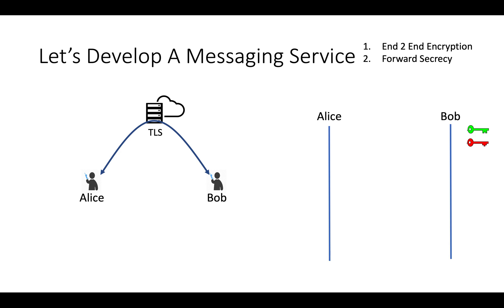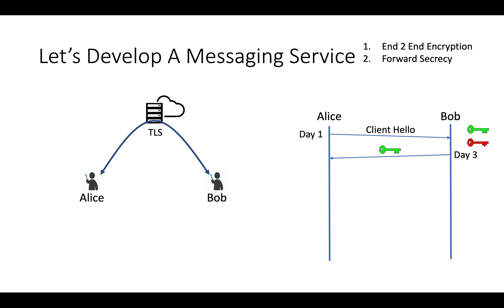For now, we are ignoring the forward secrecy issue and considering the same solution. Let's say Alice wants to send the very first message to Bob. On Day 1, Alice sends client hello to Bob. But by the time Bob receives this message, Bob goes offline. After 2 days, Bob comes online. On Day 3, Bob sends his public key to Alice. You might wonder how the message reached Bob after 2 days without a timeout.